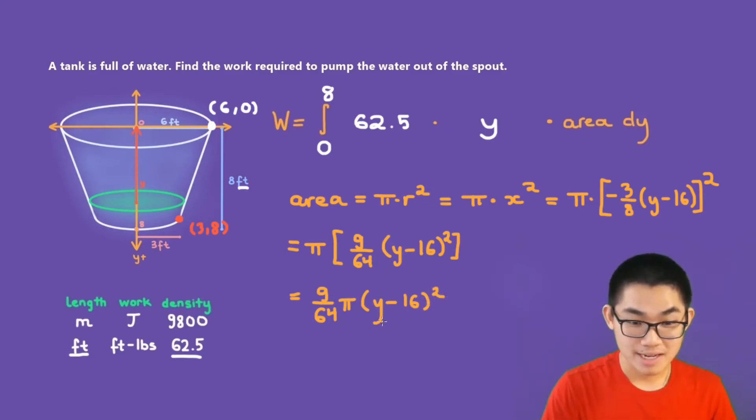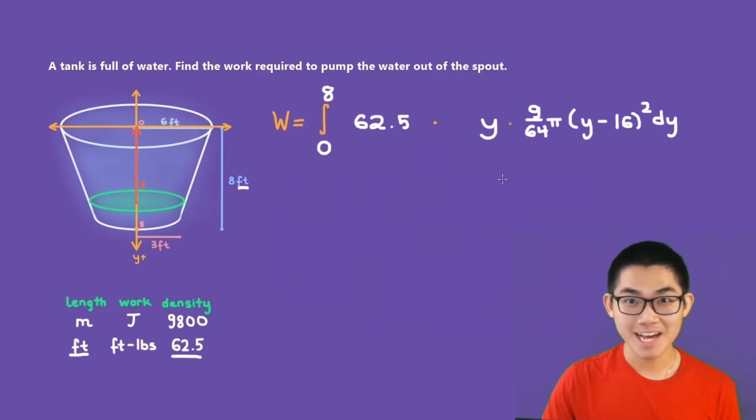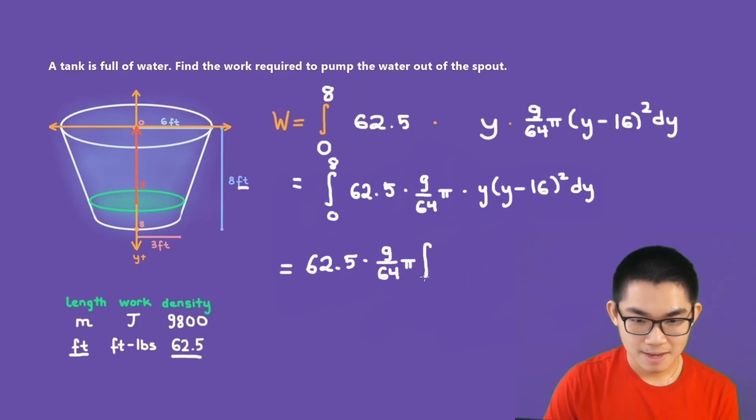Now that we found the area, let's go ahead and put it into our formula. We are almost done. The last step is to evaluate this integral. So this is equal to the integral from 0 to 8 times 62.5 times 9 over 64 pi times y times y minus 16 to the power of 2 dy. And since these numbers right here are constants, we can move it outside of the integral as well. So this is equal to 62.5 times 9 over 64 pi times the integral from 0 to 8 times y times y minus 16 to the power of 2 dy.